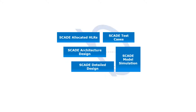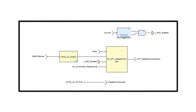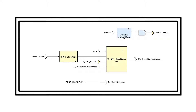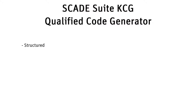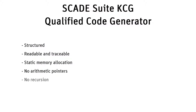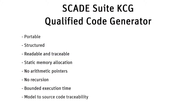The design of the application and its verification then leads to the software coding phase. For each cycle, the program generated from SCADE Suite computes its output vector from a stable input vector. There is no interaction between the program and its environment during a computation cycle, giving strong practical properties and fully deterministic behavior. The SCADE Suite KCG qualified code generator produces simple C or Ada code from the models, fitting the constraints of safety-critical embedded software. It is structured by function or by blocks, readable and traceable, with name and annotation propagation. It has static memory allocation, no arithmetic pointers, no recursion, bounded loops only, bounded execution time, and model-to-source code traceability.